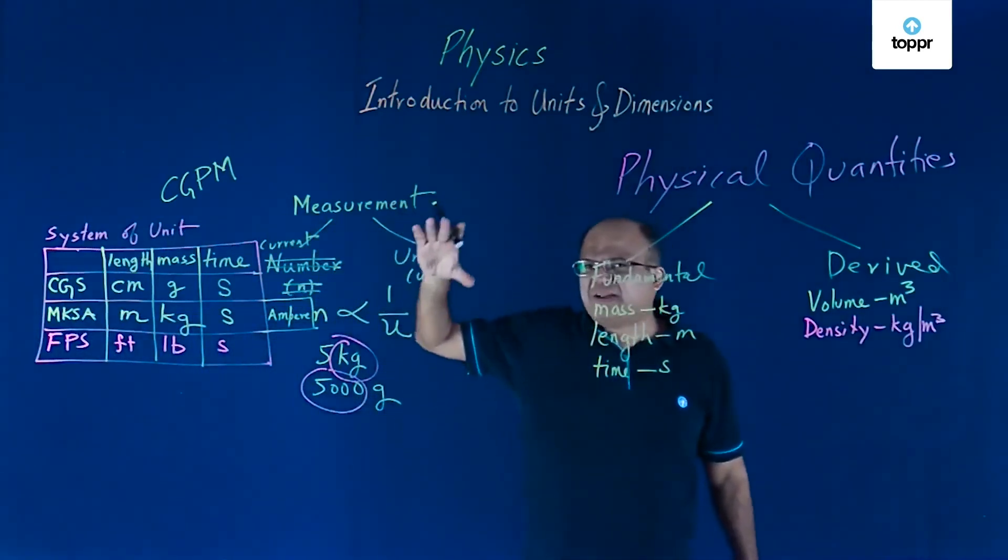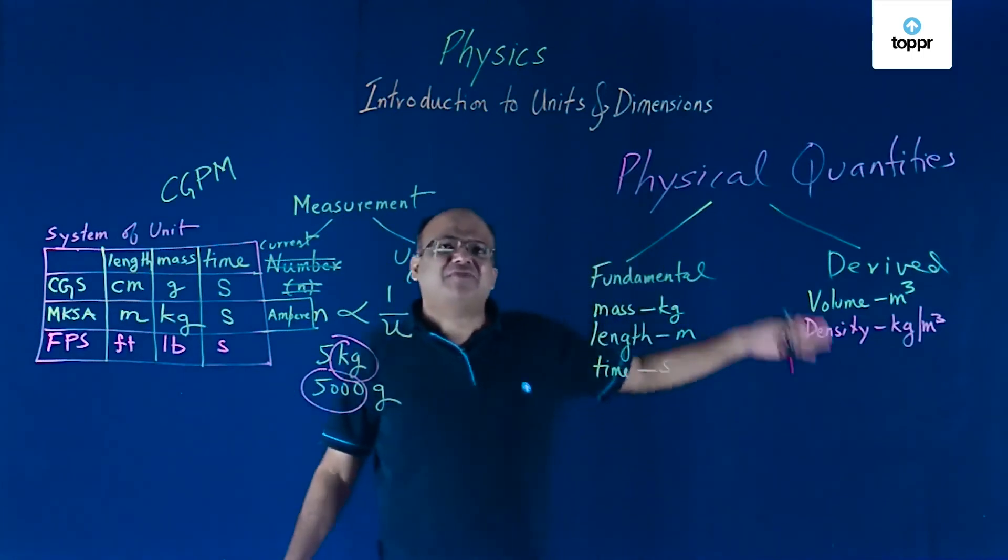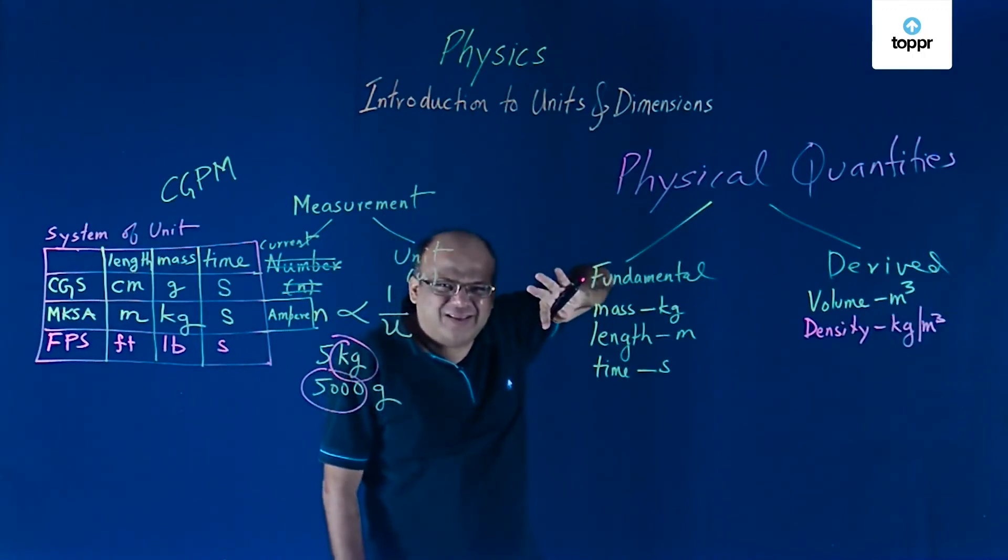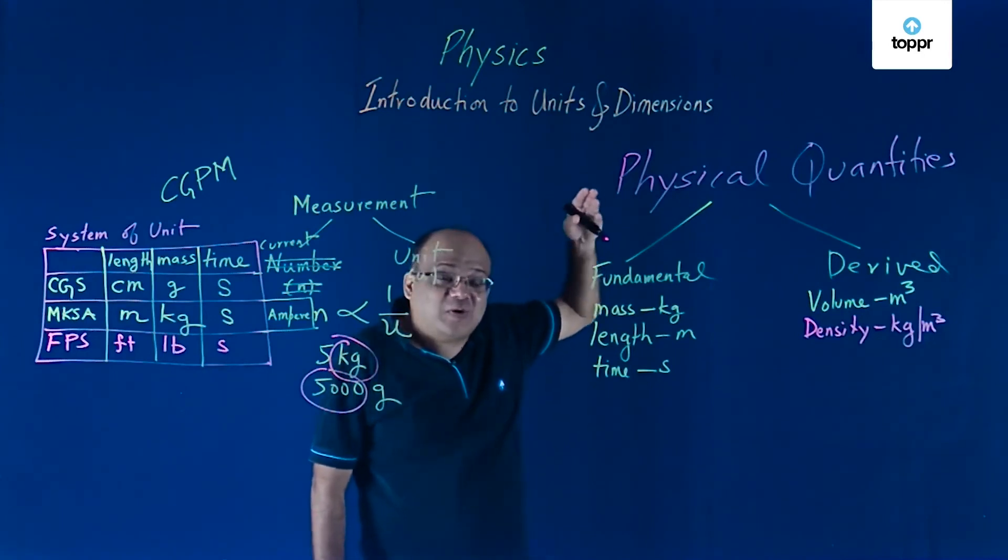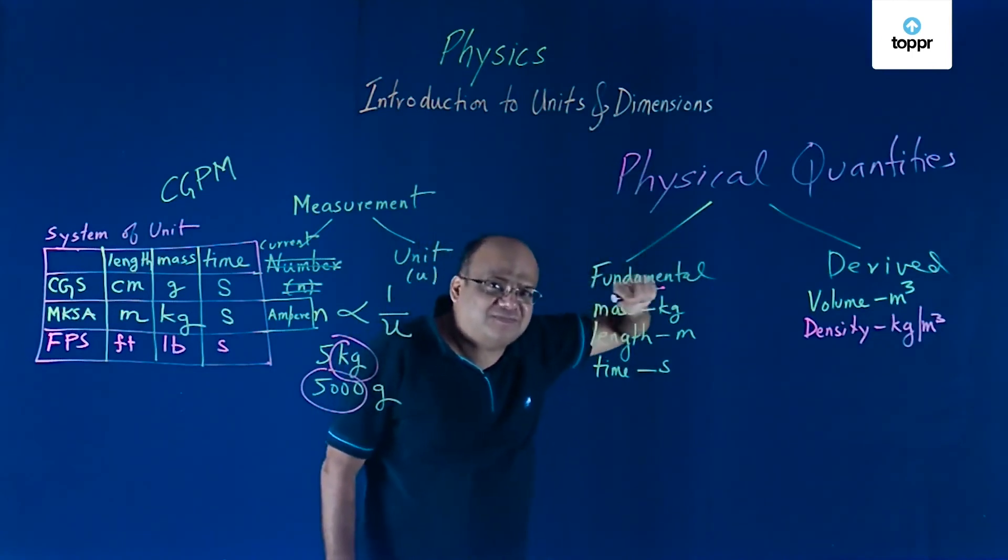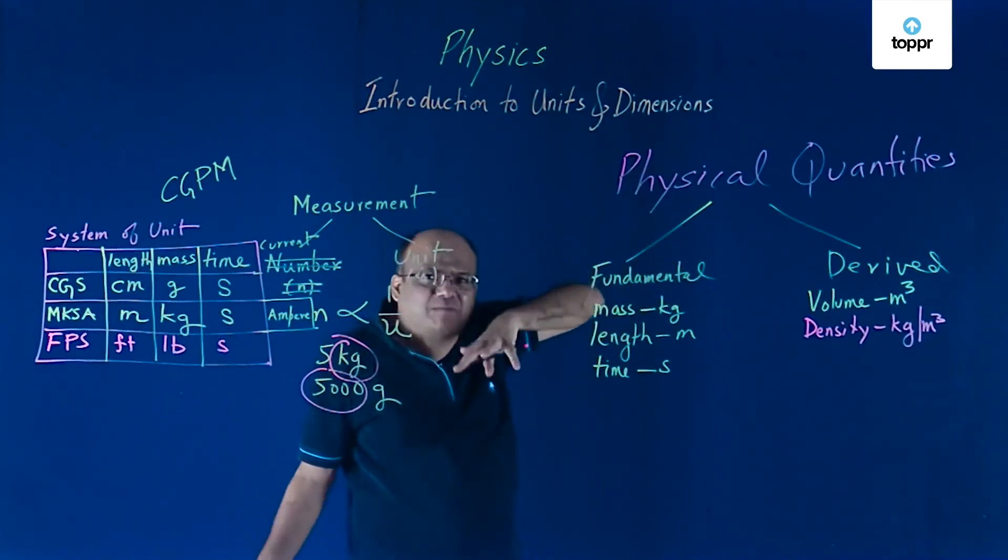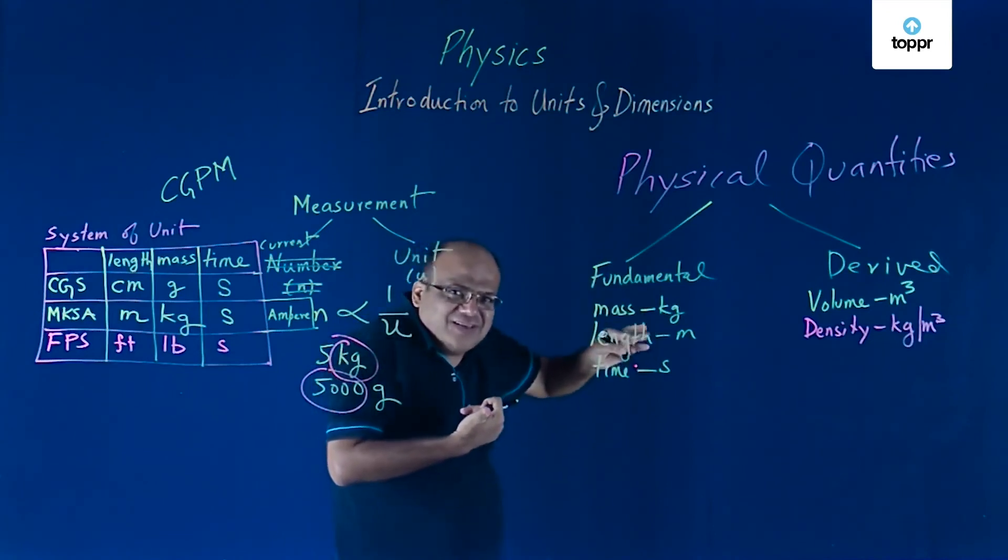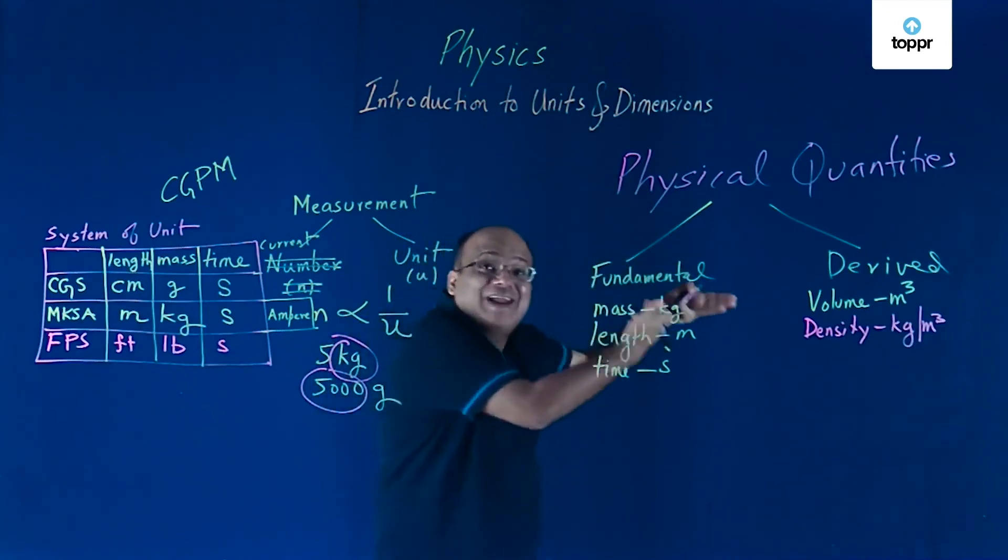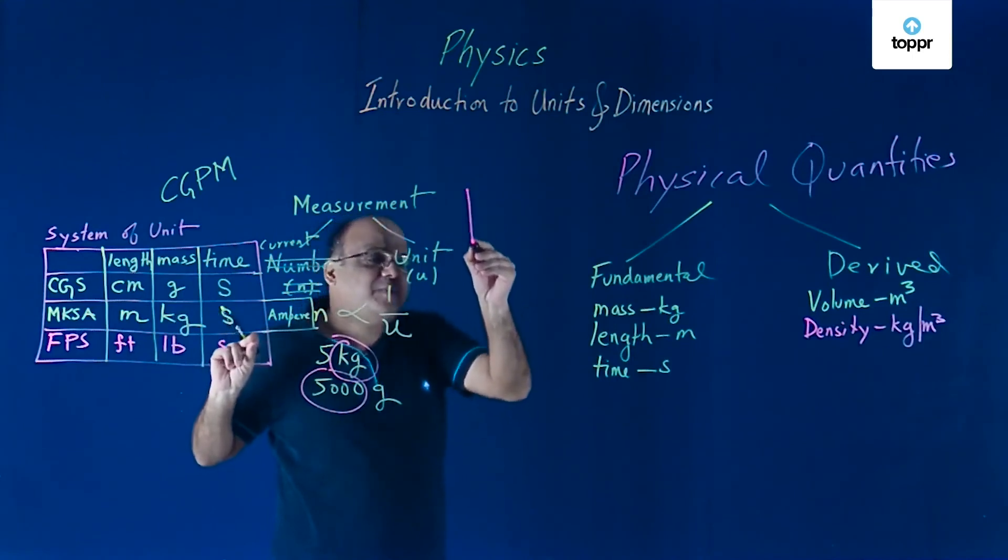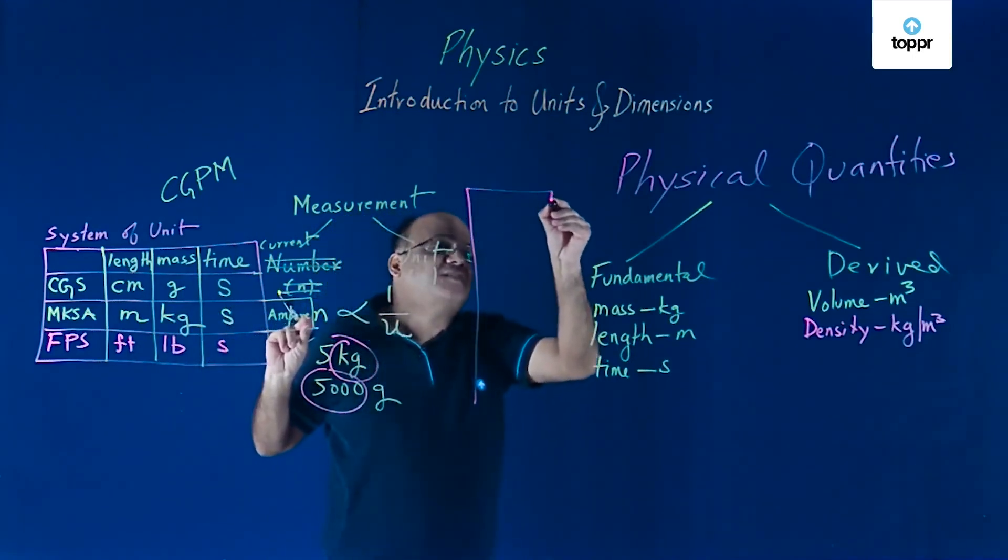All these three system of units have been there. People are using them. Different people use different kinds of units. And that led to some confusion. There is a story that some people, some scientists are doing calculations and sending a spaceship to Mars. And they are designing it such that it will orbit Mars. One set of scientists were doing calculation in FPS units. Other set of scientists were doing calculation in SI units. Because of this confusion, instead of the spaceship going around Mars, it landed on Mars. So important to be careful about system of units.